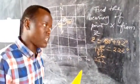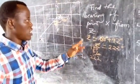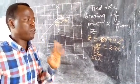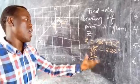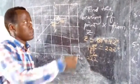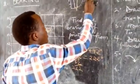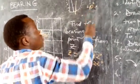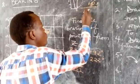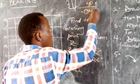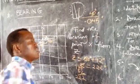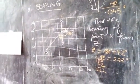Don't forget that bearing is always written in three digits. If you find that the bearing is less than three digits, you must add a zero. For example, if you get a bearing of 40 degrees only, it cannot be written as just '40' — you must add a zero to make it three digits.